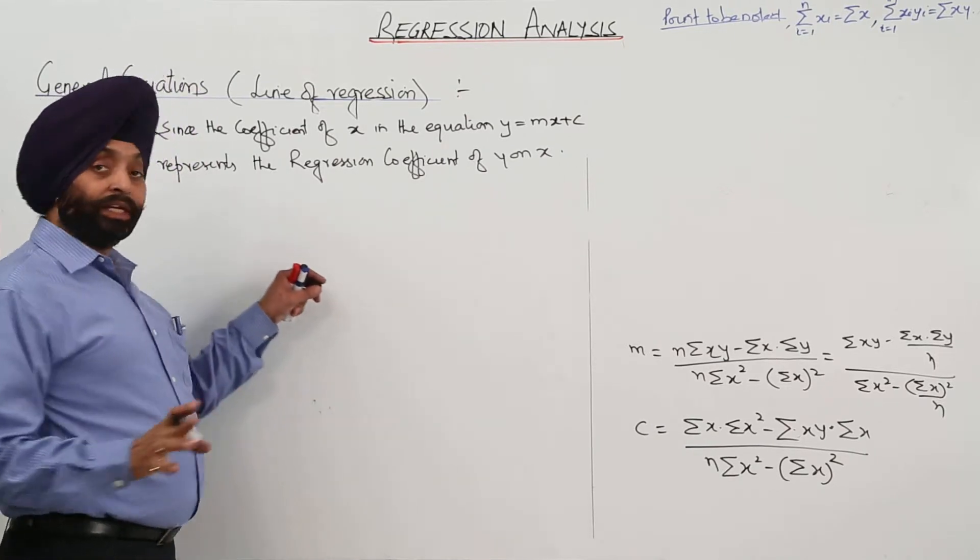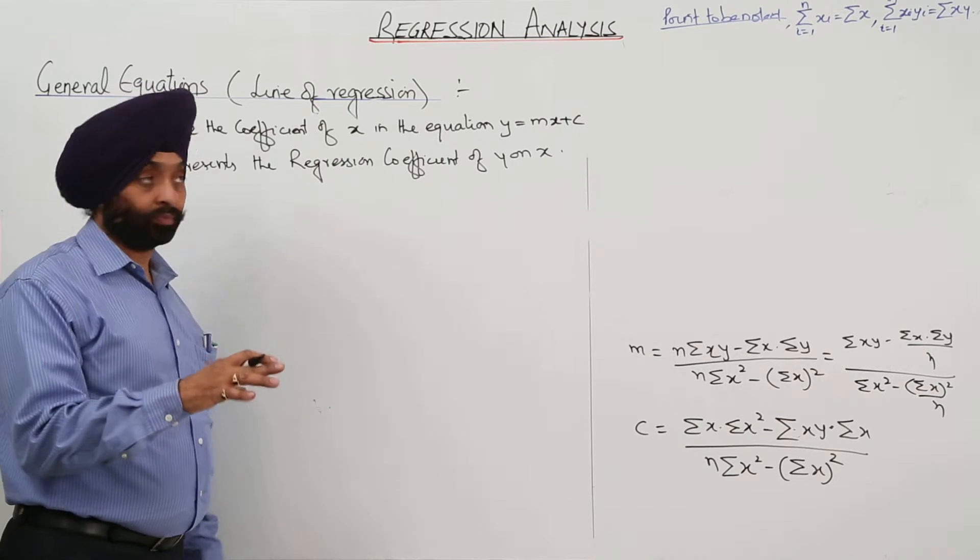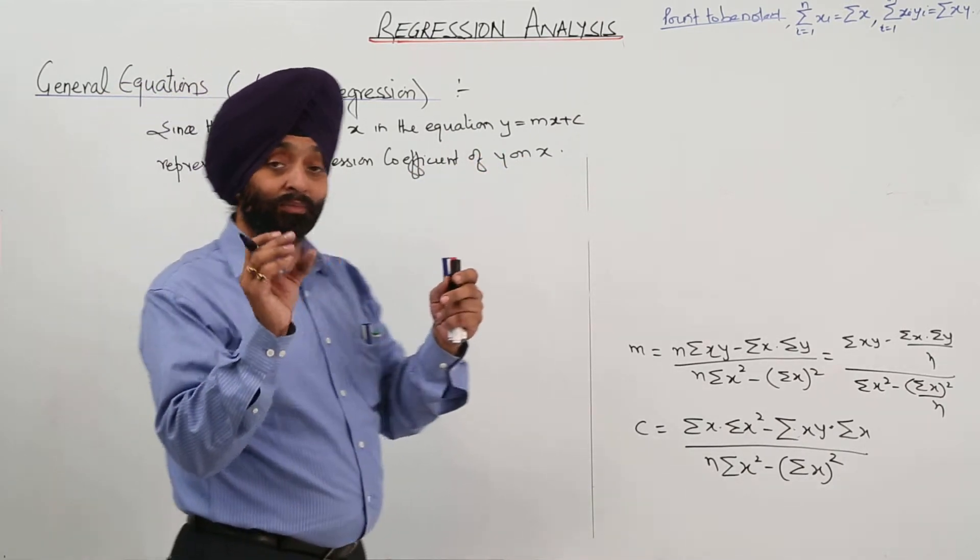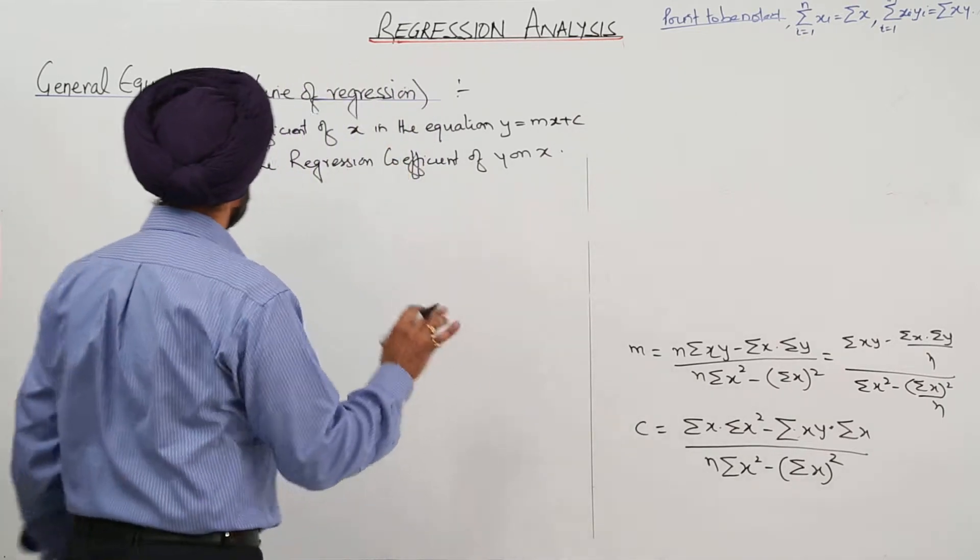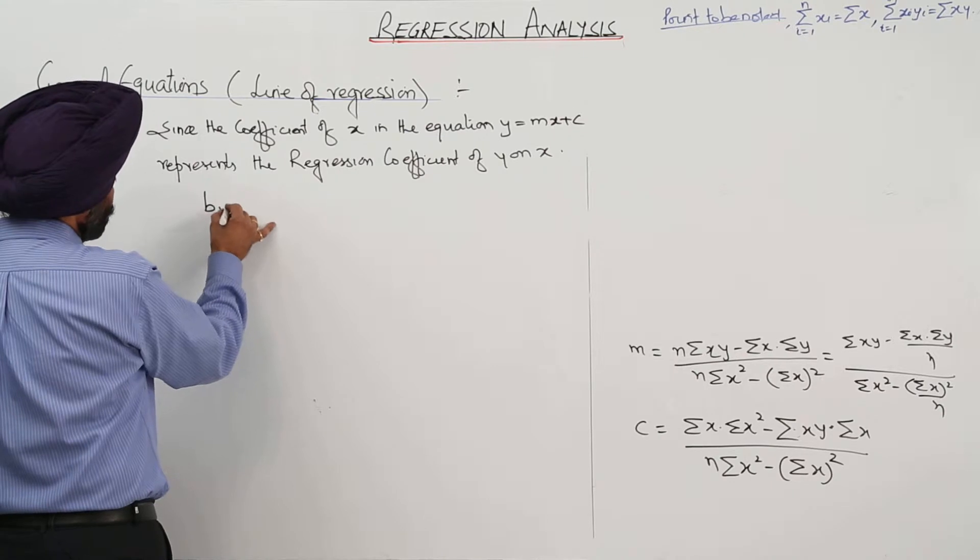We have already discussed that what slope is. Slope was the regression coefficient of y on x for this equation. So how we can write it? Some simple term what we can use. So we can write it now b in the base y x.